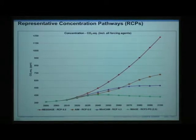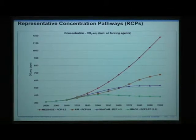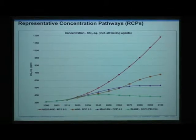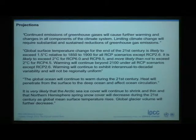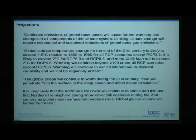These are the various scenarios that are run in the climate models to predict what will happen. Generally we'll look at the range between the lowest, which is really the most optimistic, and this one, which is if we just keep doing what we're doing today. Here are some of the projections — I want to talk specifically about sea level and ocean acidification.